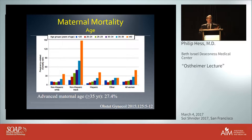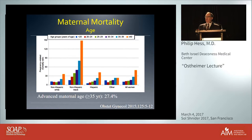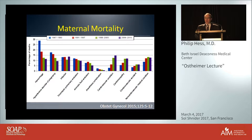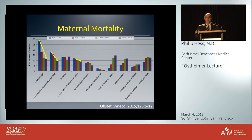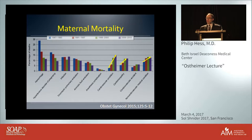A second disturbing trend: as women delay childbirth to older age, advanced maternal age now contributes to one in four deaths in the current report, significantly affecting the non-Hispanic black population. The only good news was that the relative contribution of hemorrhage, preeclampsia, and pulmonary embolism — the big three historical killers — all decreased. But maternal cardiovascular conditions, cardiomyopathy, and non-cardiovascular medical conditions including obesity all increased significantly and now cause half of all maternal deaths.